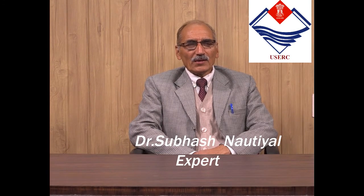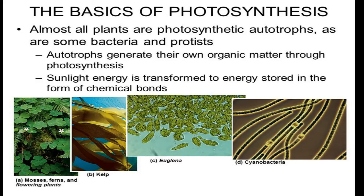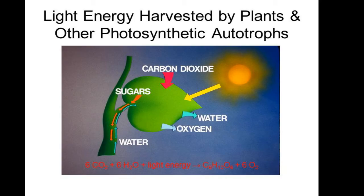The basic photosynthesis is not limited to big plants. There are mosses, ferns, flowering plants, algae, and even cyanobacteria, which all contain chloroplasts or chlorophyll. This is why all plants perform photosynthesis. These organisms are called autotrophs, which means they make their own food. Sunlight is necessary as the source of energy, and this is how solar energy is converted into chemical energy.